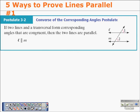The first is the converse of the corresponding angles postulate: if two lines and a transversal form corresponding angles that are congruent, then the two lines are parallel. In the diagram, we can see line L and line M — angle 1 and angle 2 are corresponding angles and they are congruent, therefore line L is parallel to line M.